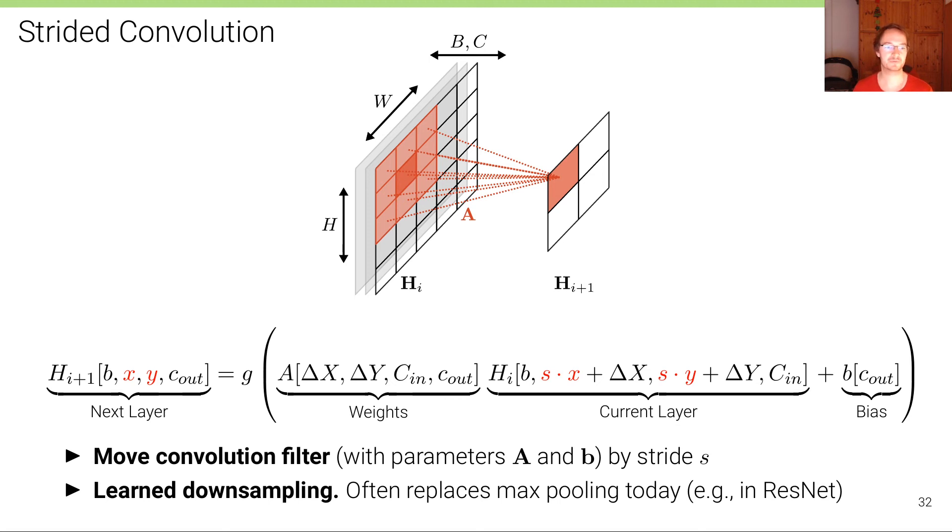It's a standard convolution with a stride. Here is the equation you've seen before, the convolution. The only difference, now highlighted in red, is that we have for the input x, y location, we query the input tensor at stride times x plus delta x and stride times y plus delta y. So we move the convolution filter not by one pixel, but by a stride of s with respect to the input tensor.